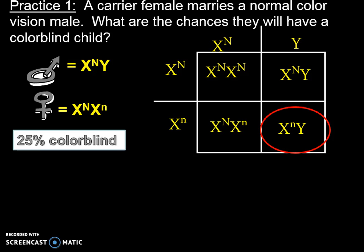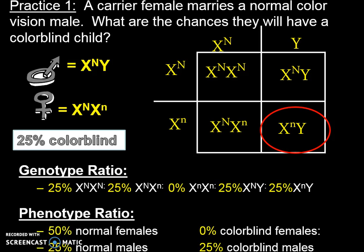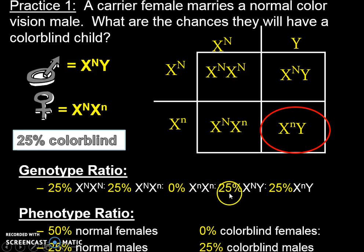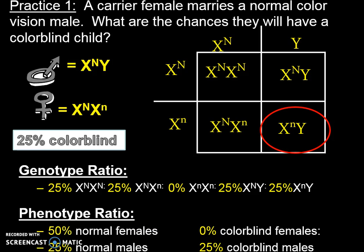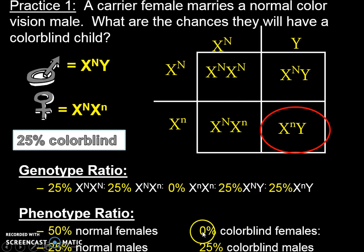We need to do genotype and phenotype ratios. Genotype ratios: 25% homozygous normal female, 25% carrier female, 0% abnormal female, 25% normal male, 25% abnormal male. For phenotype, since the carrier female still looks normal, we get 50% normal females, 0% colorblind females, 25% normal males, and 25% colorblind males.